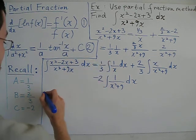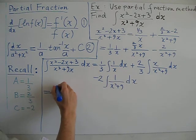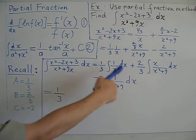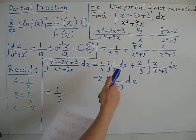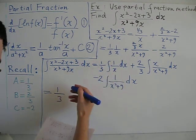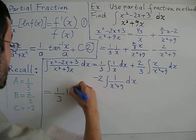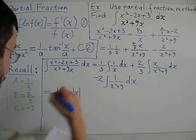At this point, let us try to evaluate each of these integrals. So 1/3 times the integral of 1 over x dx. Well, integral of 1 over x dx is simply given by ln of the absolute value of x.